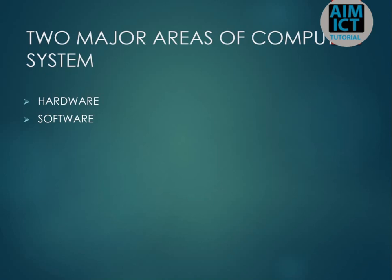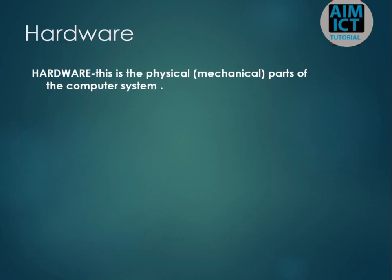We also discussed the two major areas of a computer system: hardware and software. Hardware is the physical or mechanical part of the computer system — the tangible part. Anything which you can touch in the computer is called hardware. All tangible parts of the computer are called hardware.